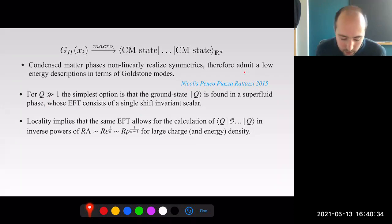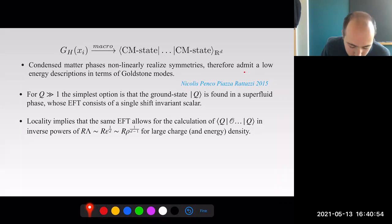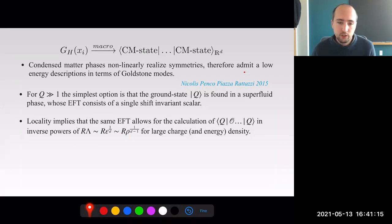The fact that correlation functions in the microscopic limit—at very close distances once you zoom in—can be described by such a particular theory implies by locality that the same description applies for the full correlation function on the cylinder. This description works in inverse powers of some cutoff divided by the IR scale, which is the cylinder radius. The cutoff is generally given by the energy density or the charge density raised to the appropriate power. So symmetry breaking and locality underlie the simplification which occurs at large charge and large energy density.